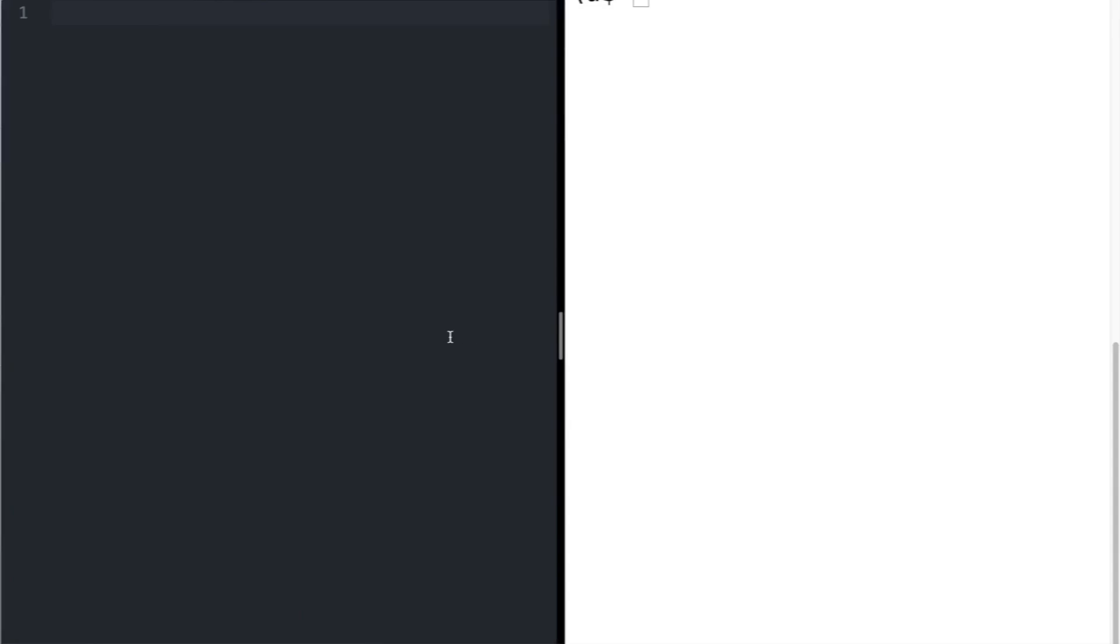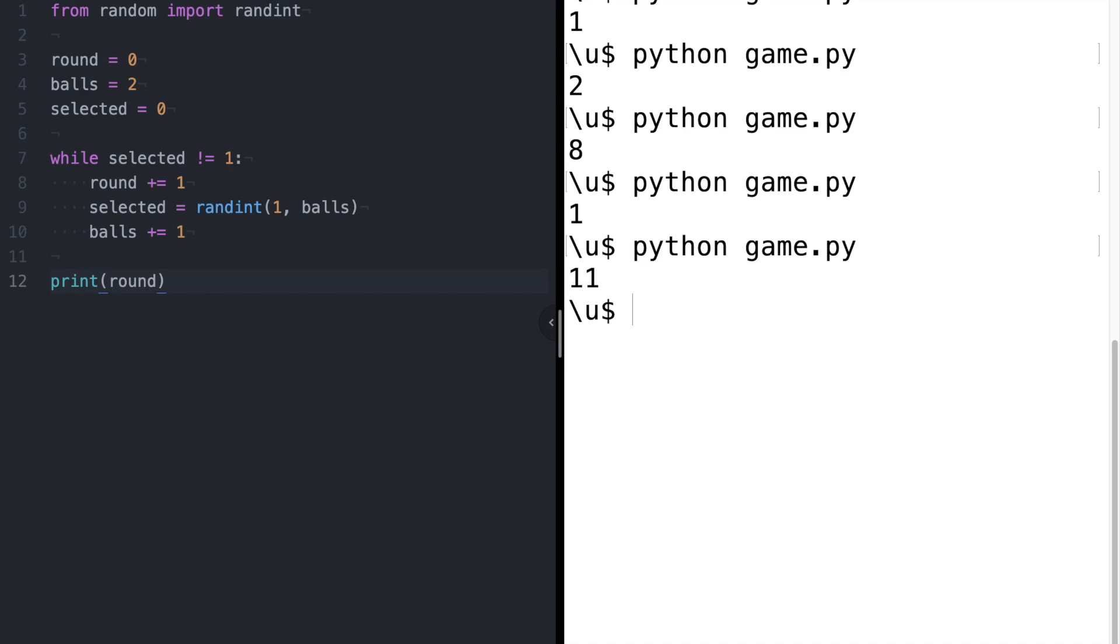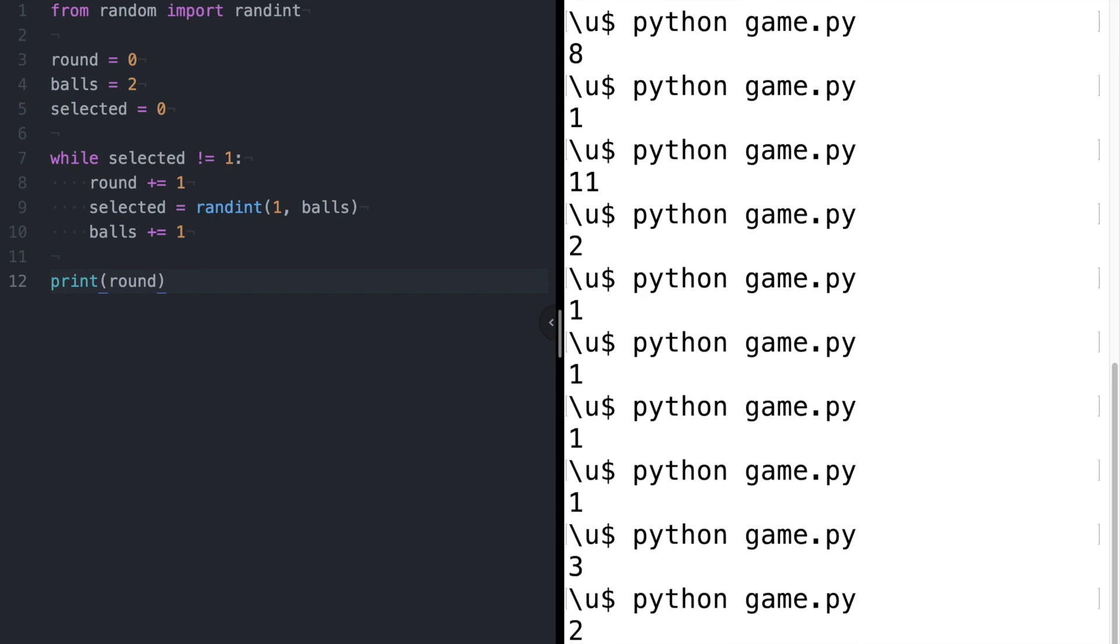Maybe before we try analyzing it theoretically, we should get some real data on it. I don't have unlimited time and unlimited cotton balls, so I wrote a computer program to simulate this game of chance. Each time I run the program, it plays the game and spits out the number of rounds taken to draw the blue ball. Now you'd think that by adding more and more balls to the bag, it might be possible to never get the blue ball, but the computer program always seems to terminate.